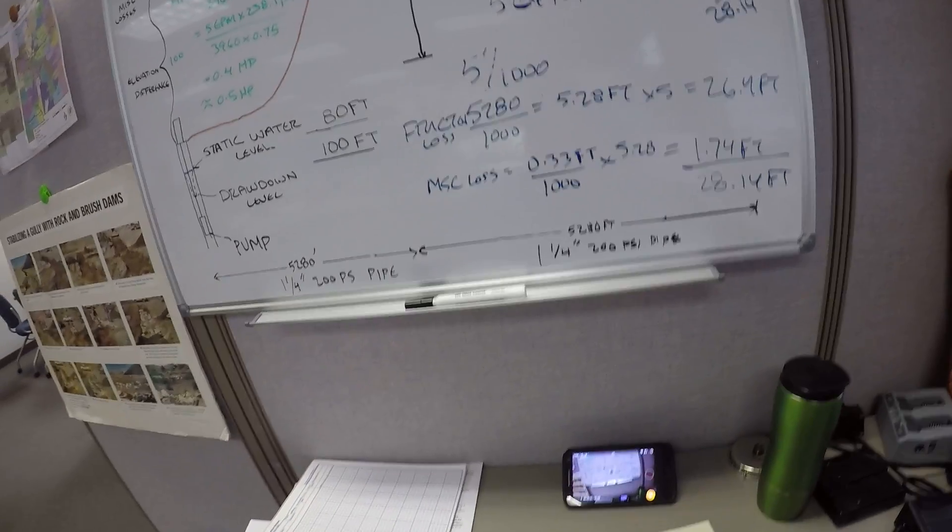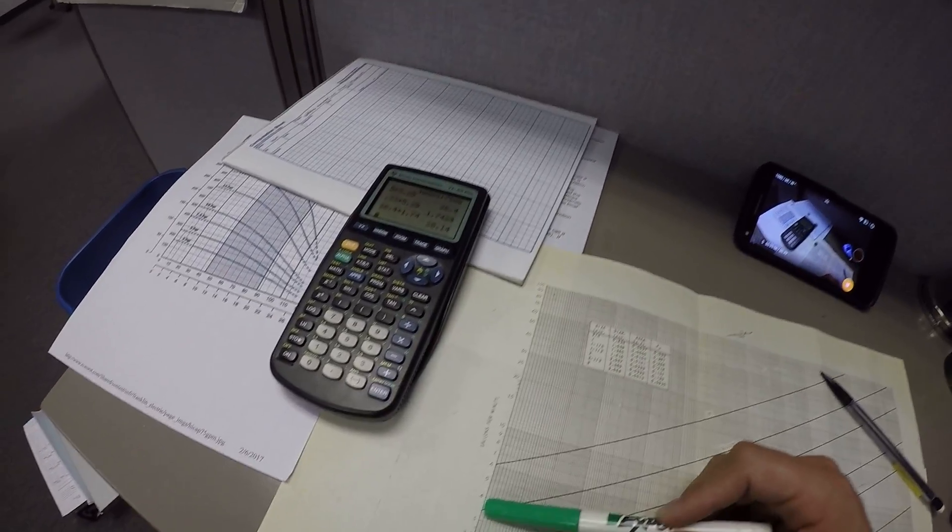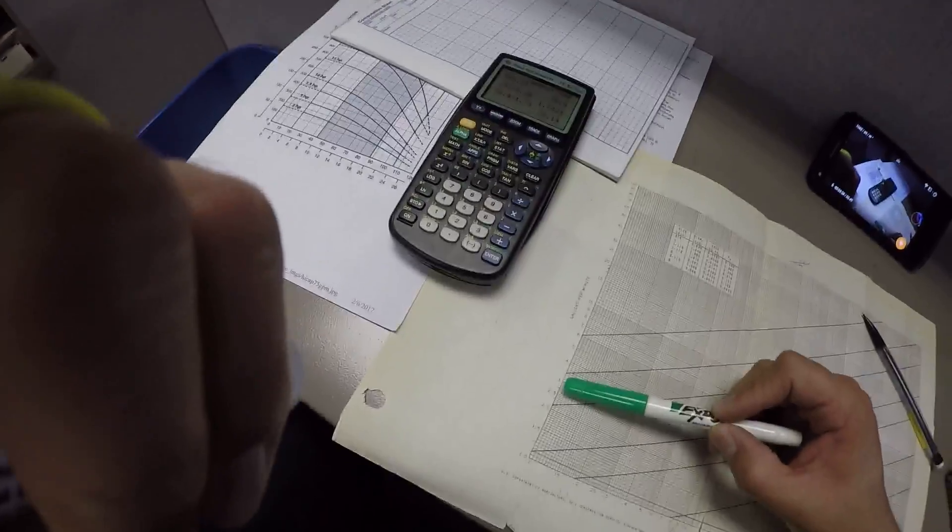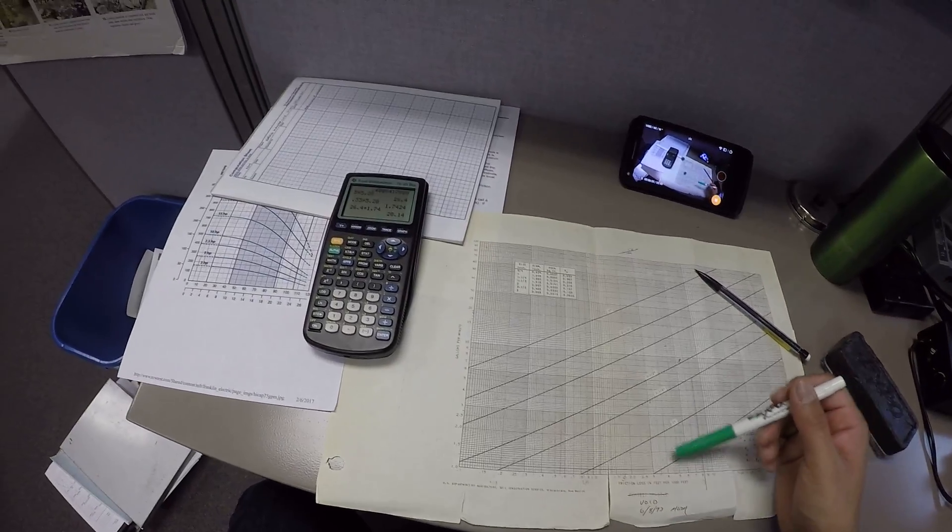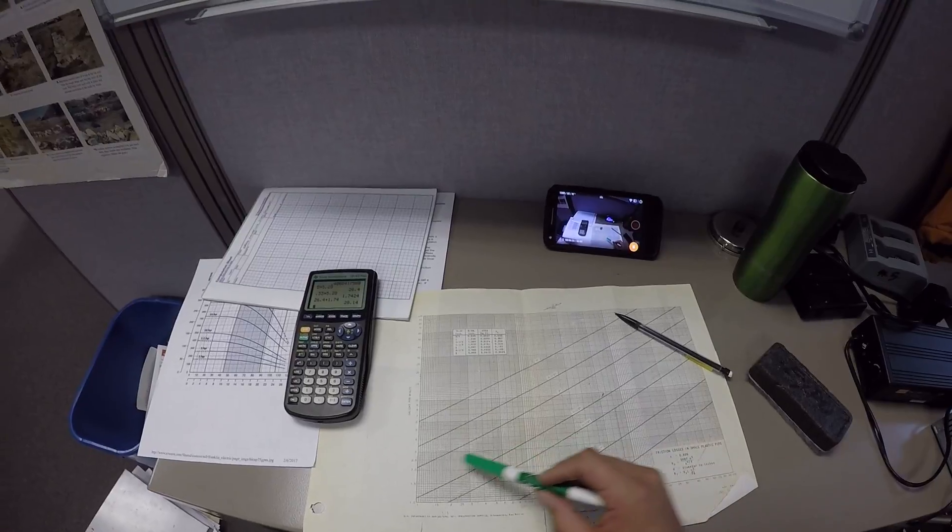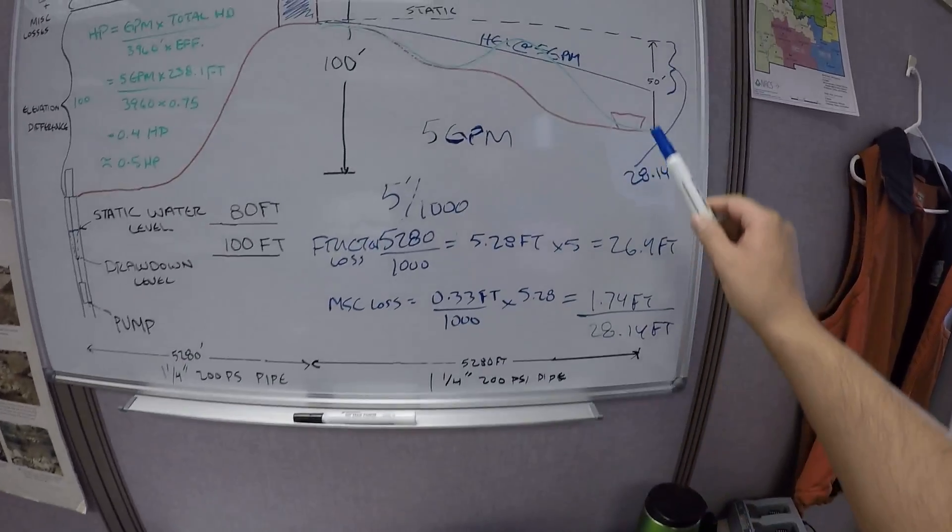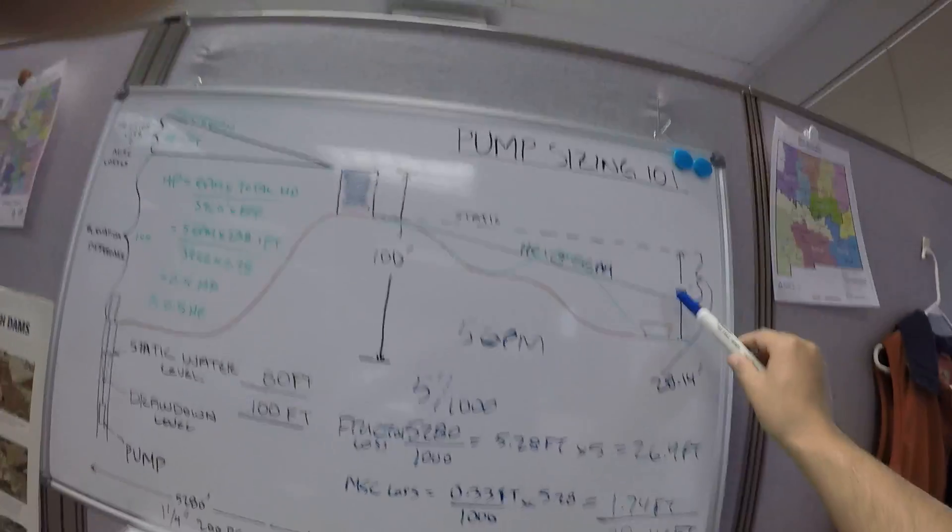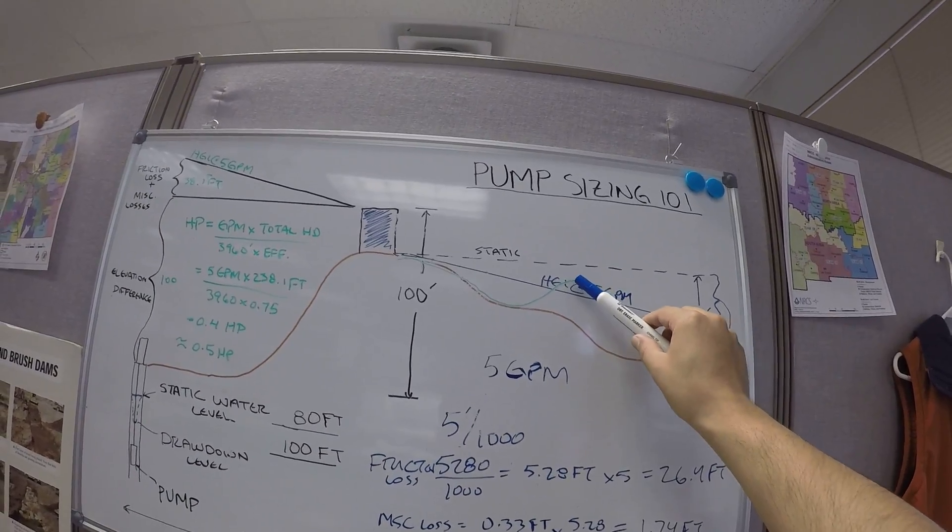You look at your chart, and you're going to go and choose a lower GPM, and loss per 1,000 feet for 1.25 inch. And you're going to keep on playing with the gallons per minute until that hydraulic gray line passes above that high point.